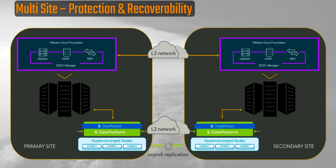Before I get started with the demonstration, let me provide a logical explanation of the infrastructure we're using. We have two separate data centers, two separate infrastructures, which means we have a multi-vCenter infrastructure in play. At the data center interconnect layer, we have the infrastructure connected via Layer 3, and we're utilizing NSX to manage the overlay between those two sites.